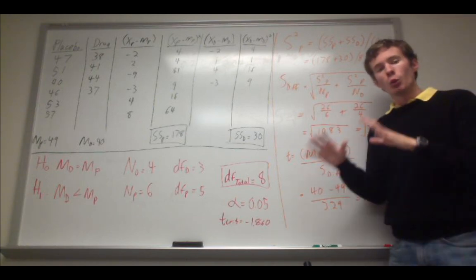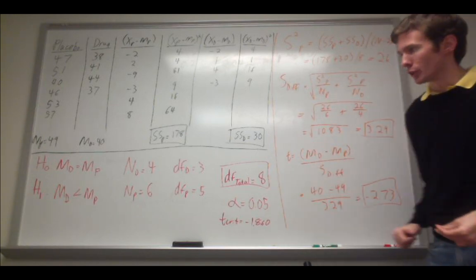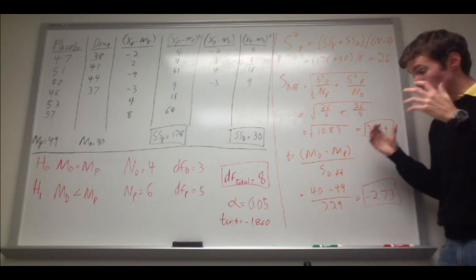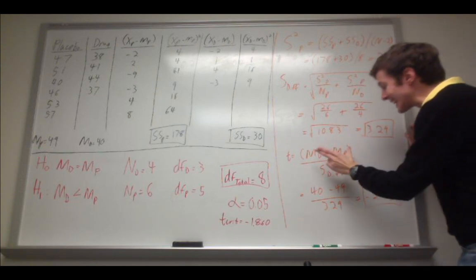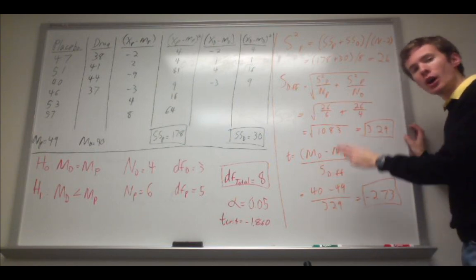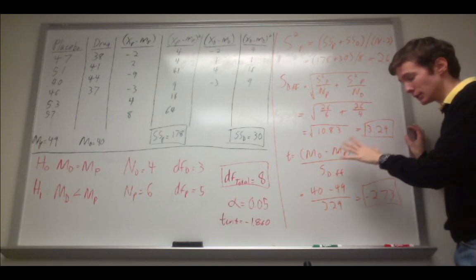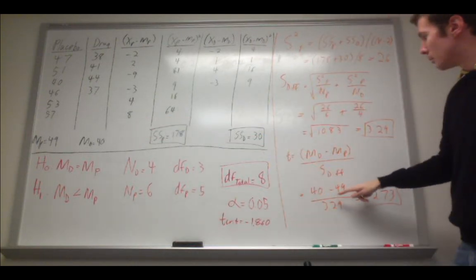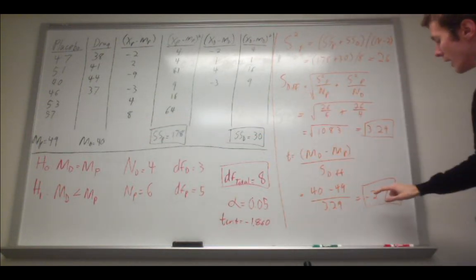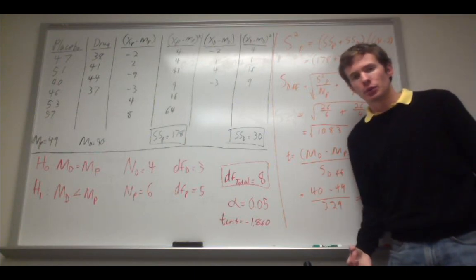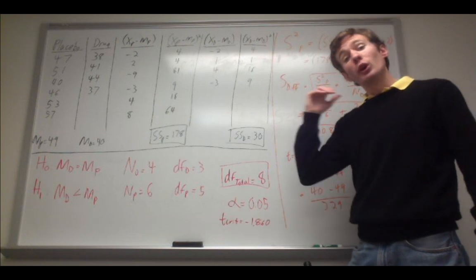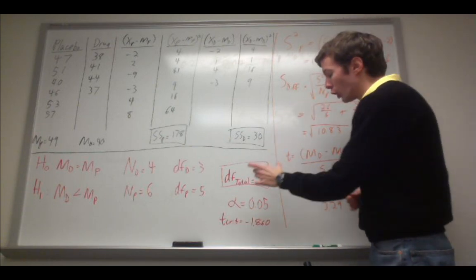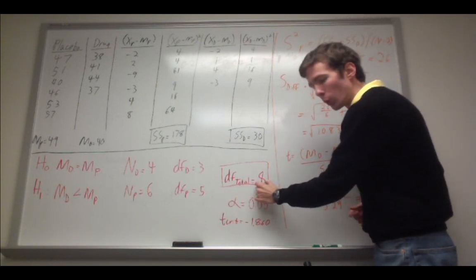Conceptually, this is similar to standard error from z-tests and t-tests. To calculate t, we take the difference between the means of these two groups — because we want to compare them against each other to see if there is an effect — and we quantify it in terms of standard error of the difference. That's 40 minus 49, divided by the s-diff we just calculated, and I get a t-value of negative 2.73. I compare that to my t-critical threshold. It's more extreme than that, so I'm going to go ahead and reject the null hypothesis. When you do this for the t-table, look up the column with degrees of freedom and the total degrees of freedom.